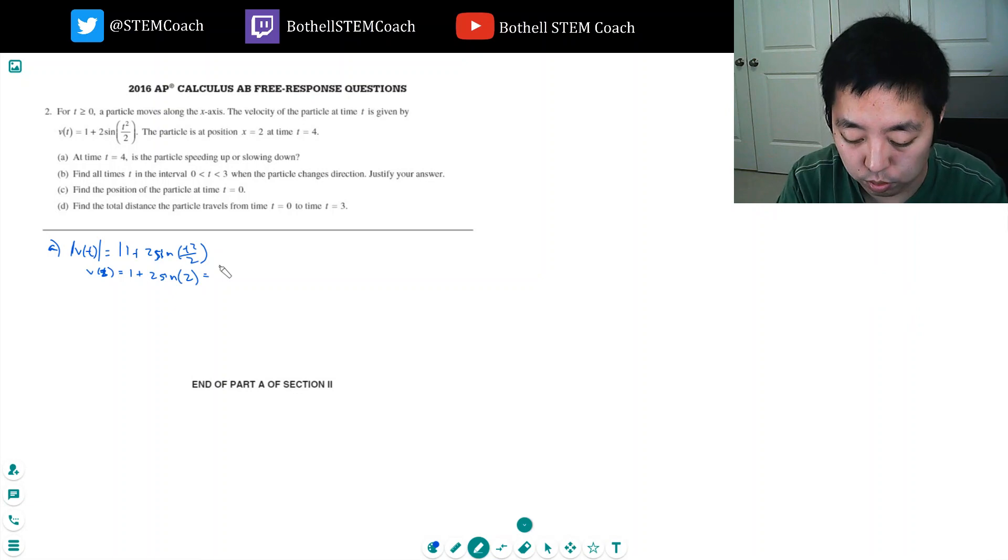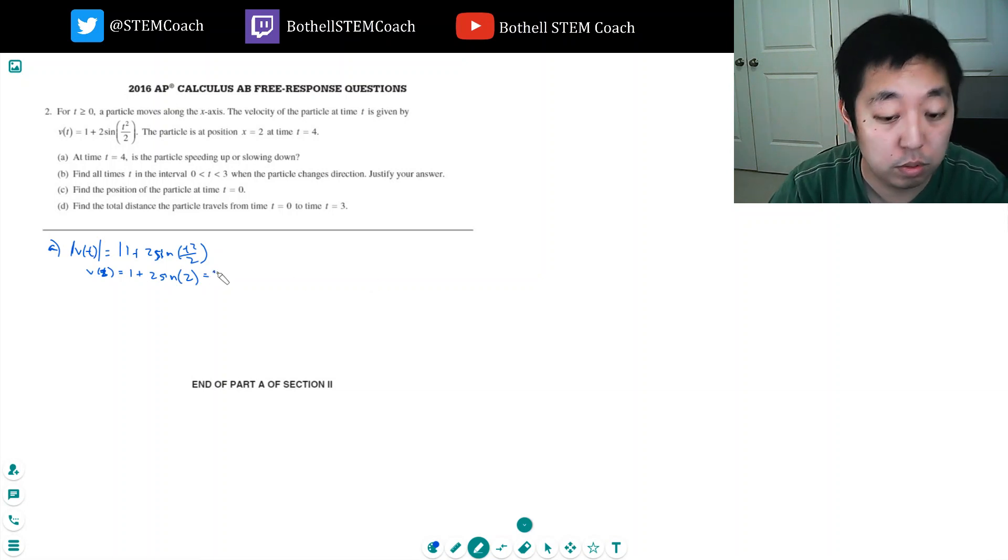It's 1 plus 2 sine t squared of 2. And what does that equal to? 1 plus 2, make sure I'm in radian, sine of 2 is 2.81. So first of all, its velocity is at 2.81.